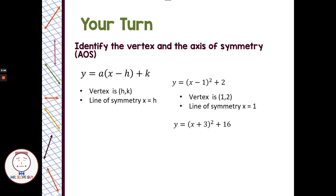So on the first one, we have a vertex at 1, 2, and our line of symmetry is x equals 1. On the second one, we have a vertex at negative 3, 16, and our line of symmetry is x equals negative 3. Double check — make sure you got these x values correct, because the signs are the opposite. We have a negative h in the vertex form formula.